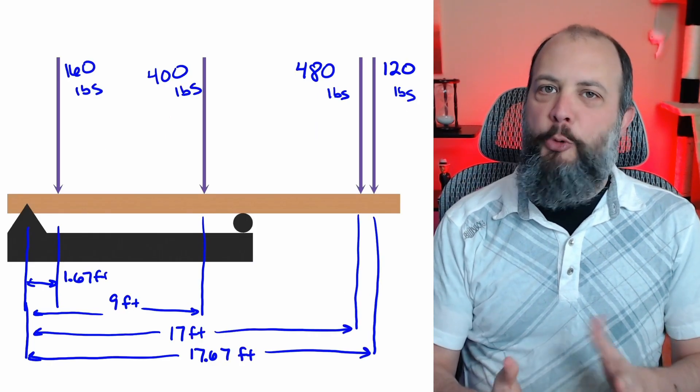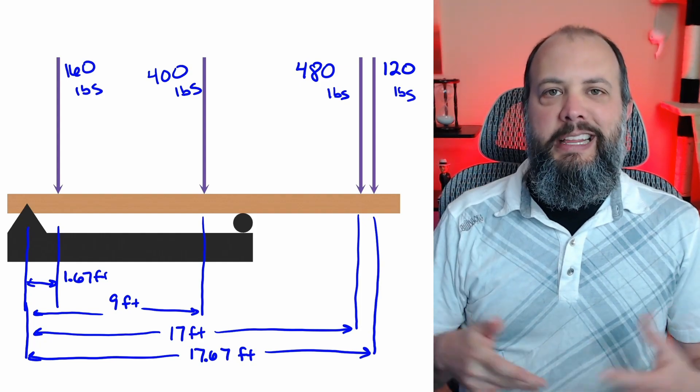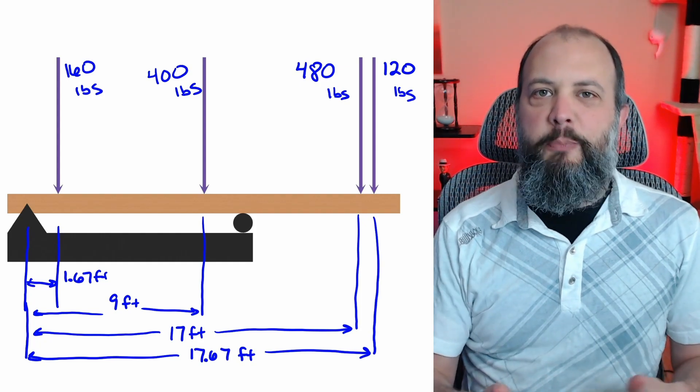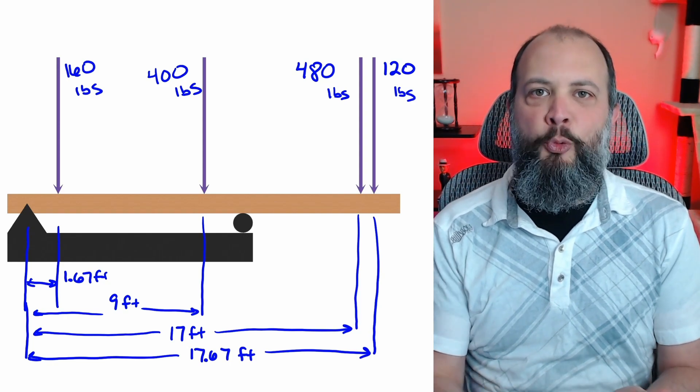And here for a final answer, I've redrawn the beam without any distributed loads, just my four-point forces. And at this point, you would be perfectly set up for rigid body equilibrium problem to solve for the reaction forces at that pin and roller joint.